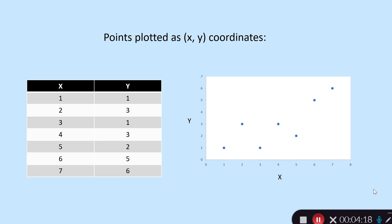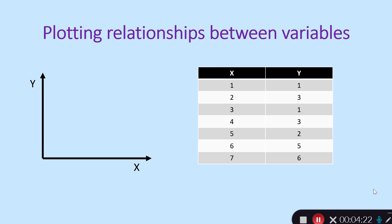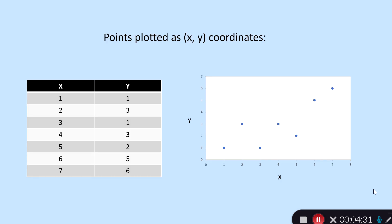Here I've got a small made-up data set with scores for each case on the x and y variable, plotted as x-y coordinates. For example, the first row has x equals 1 and y equals 1 — plotted accordingly. The second observation has x equals 2 and y equals 3, so plotted at 2 on the x-axis and 3 on the y-axis. You can plot these as pairs of points, one point relating to a score on both x and y.